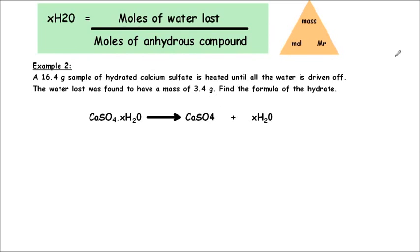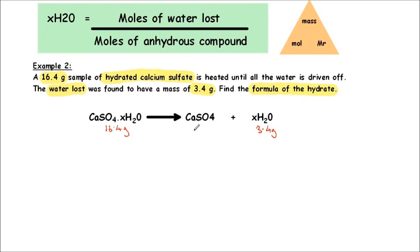Let's look at another example with a slightly different layout. A 16.4 gram sample of hydrated calcium sulfate is heated until all the water is driven off. The water lost is found to have a mass of 3.4 grams — note that this time we're given the mass of water directly, not the anhydrous product. It's very important to read the question carefully. We can work out the mass of the calcium sulfate produced: 16.4 minus 3.4 equals 13.0 grams.